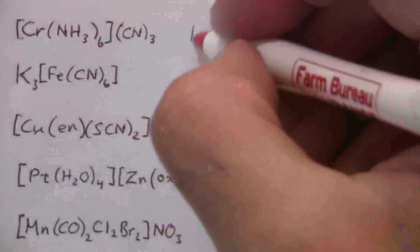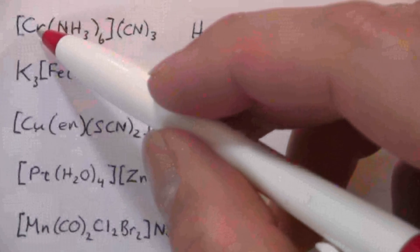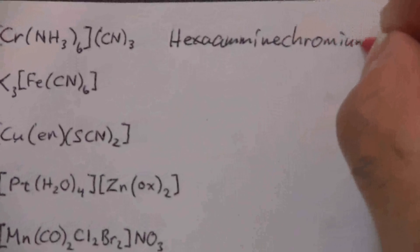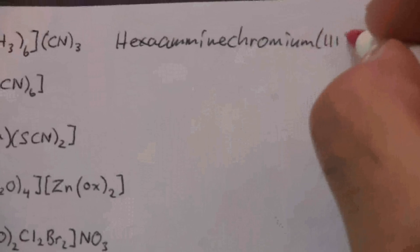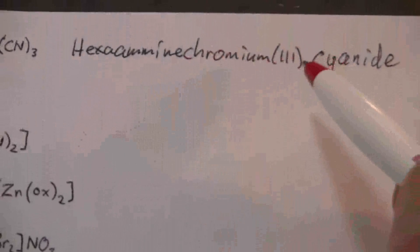Okay, so this is amine. When it's a ligand we call ammonia amine, and this is hexaamine, so that's how we start it: hexaamminechromium 3 in parentheses with roman numerals, and then cyanide, that is the counter ion. All right, so there we go, we've named the cation and the anion and we're done.